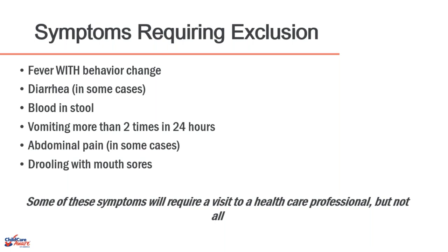Regarding blood in the stool: if you see light blood associated with passage of hard stools — constipation — that may not require exclusion. But blood in the stool not related to passage of hard stools is a symptom requiring exclusion. For vomiting, if you already have a care plan for a child with a diagnosis of GI reflux, small spit-ups from pre-diagnosis do not need to lead to exclusion.